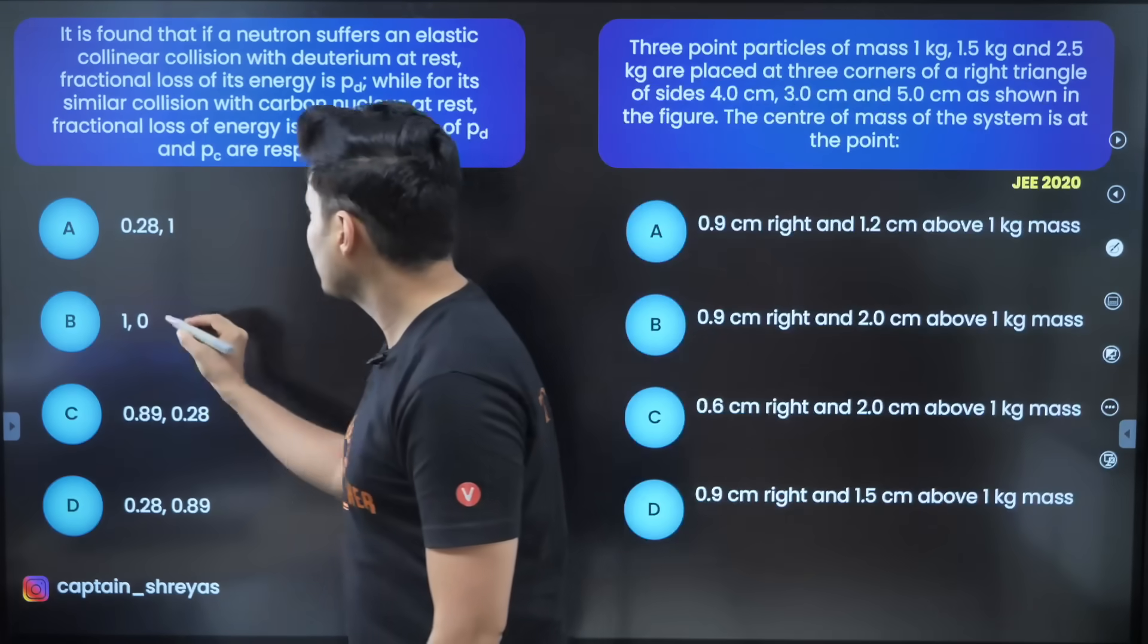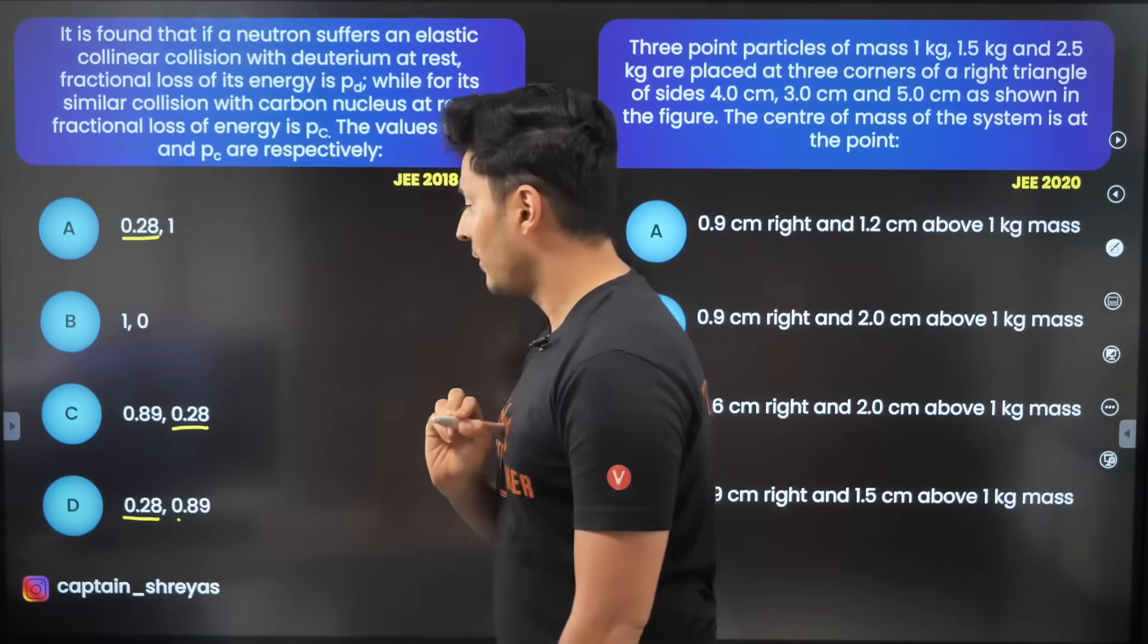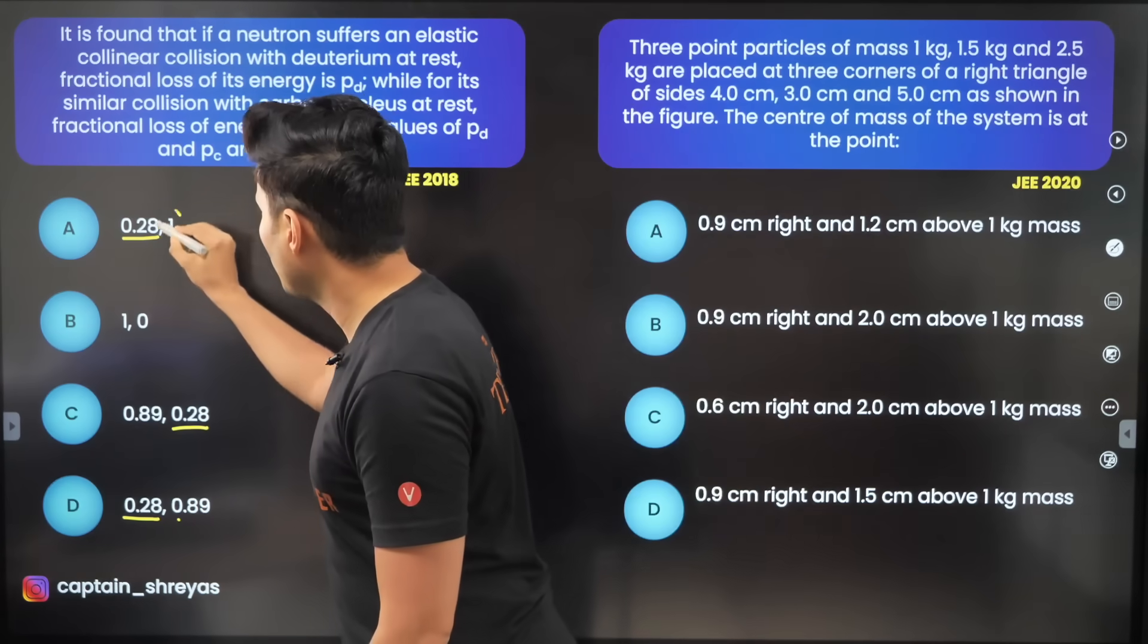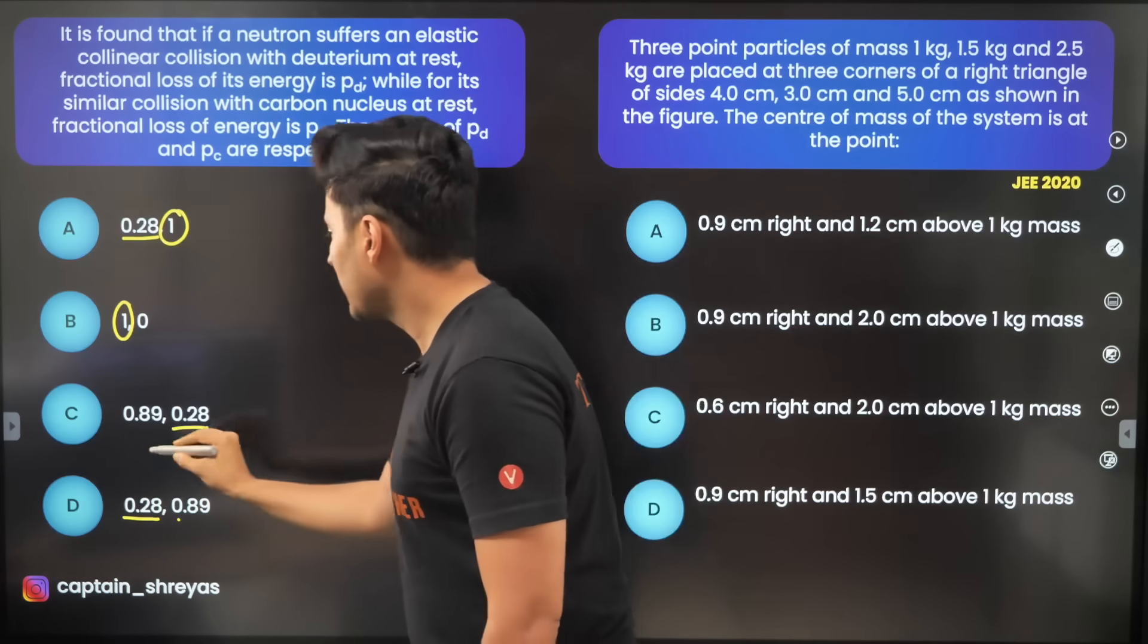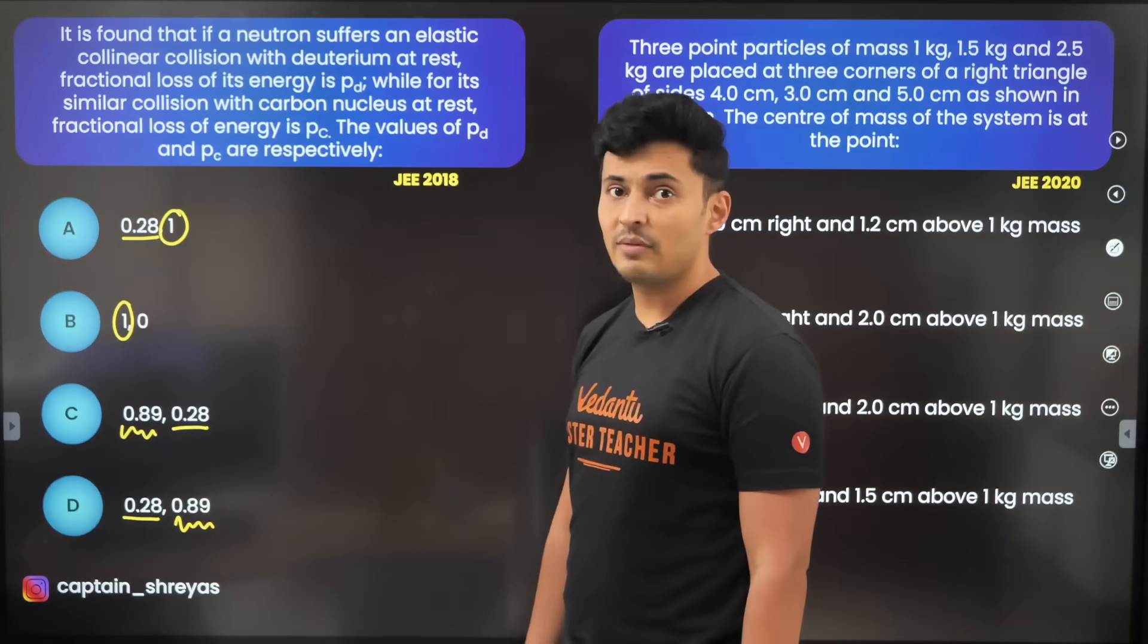Now for this one I can see 0.28 common. I can also see number 1 common over here. I can also see 0.89 common over here and here. Also I see one more thing.